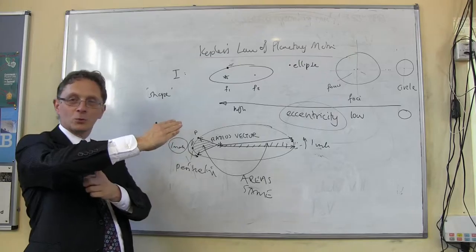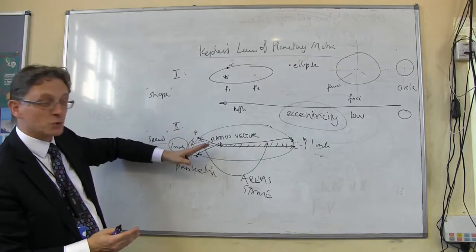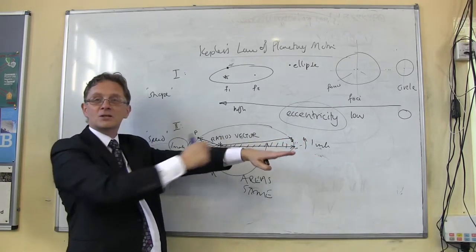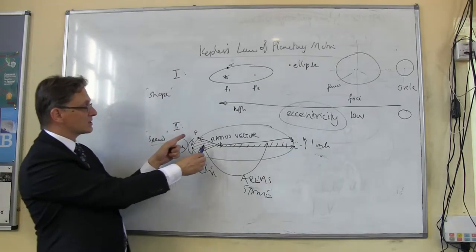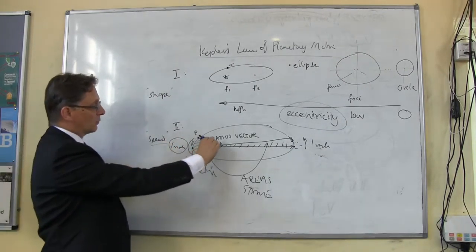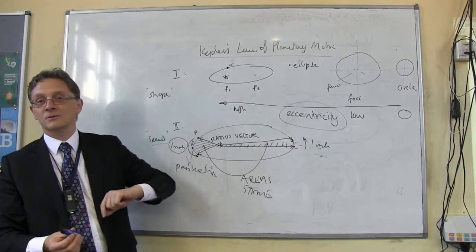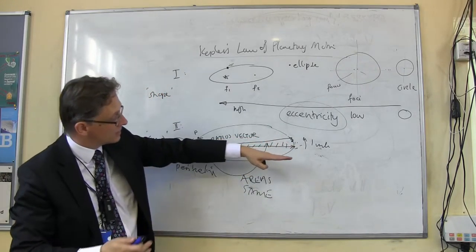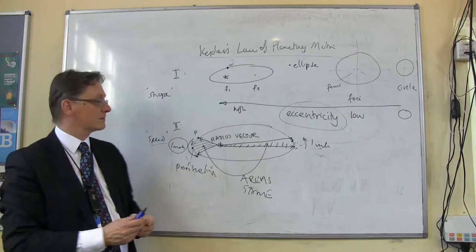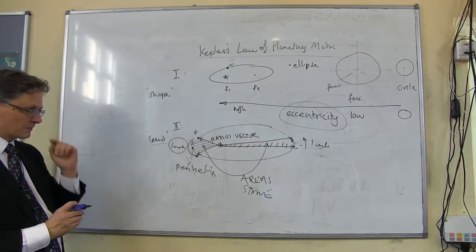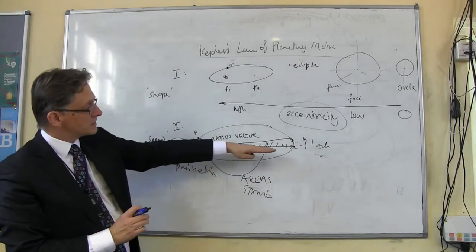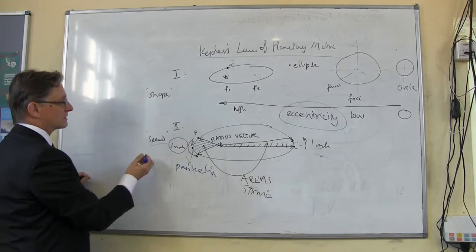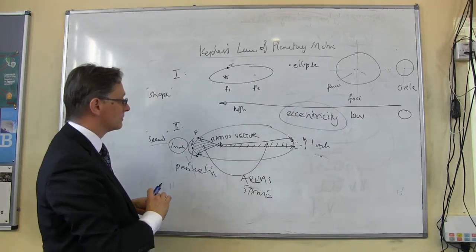The radius vector — the hand of the clock — moves quickly when close to the Sun but is quite short. Out at aphelion it moves much more slowly, but of course it's much longer. What Kepler found was: the radius vector changes its length and changes its position so that it covers equal areas in equal times. This has become known as the Equal Area Rule.